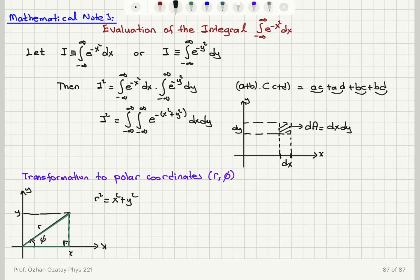Furthermore, I need to know what the incremental area element becomes — what will replace dx dy in polar coordinates?